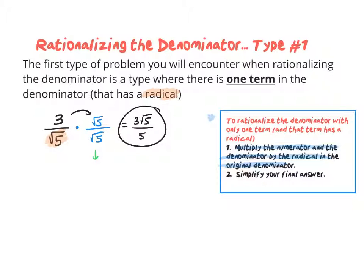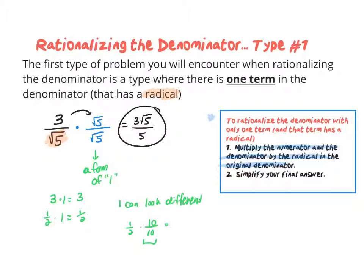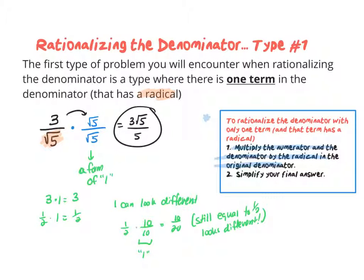It's important to see that this is just a form of one. When we take any number like 3 and multiply it by one, we don't change the value. Even 1 half multiplied by one is still 1 half. One can look different but it's still one — so when we're rationalizing the denominator, all we're really doing is multiplying by a form of one.